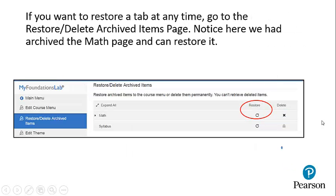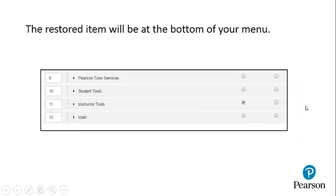If you want to restore a tab at any time, go to the Restore Deleted Archived Items page. Notice here we archived the Math page and we can now restore it. The restored item will be at the bottom of your menu.